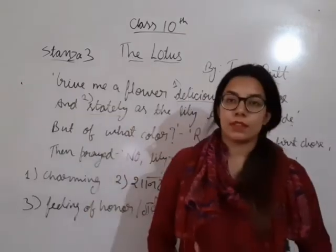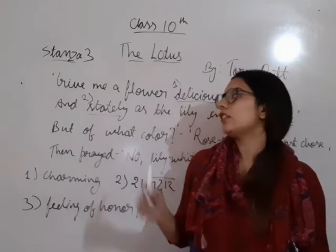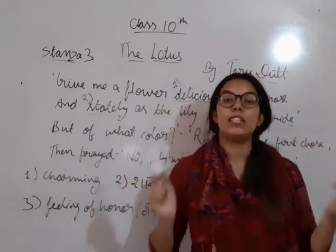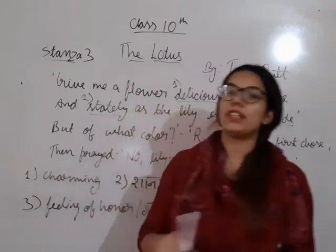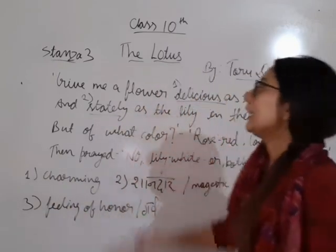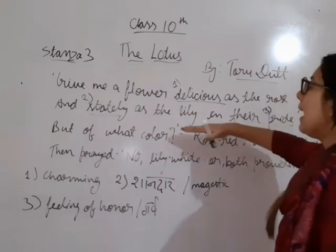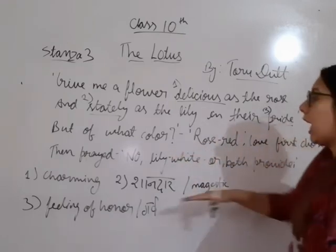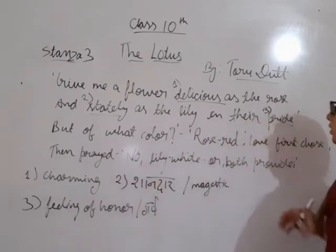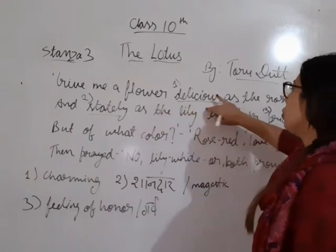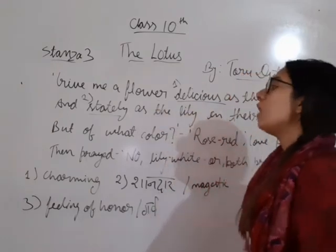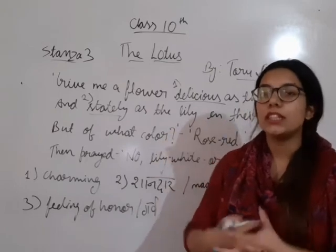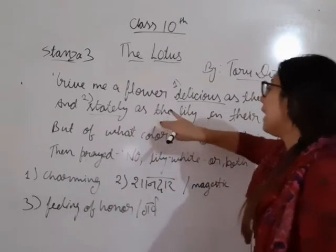Now let's talk about stanza three. The god of love goes to the goddess of Flora and asks for a flower with both qualities. 'Give me a flower delicious as the rose and stately as the lily in their pride.' Delicious here means charming, very beautiful — so Love wants a flower as charming as the rose. Stately means majestic, amazing — as magnificent as the lily when the lily feels pride and looks even more beautiful.